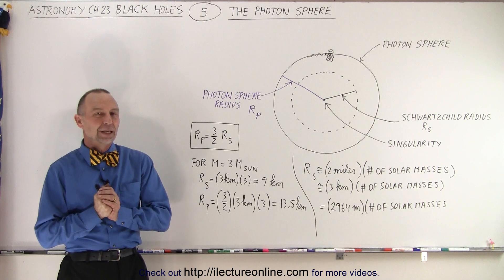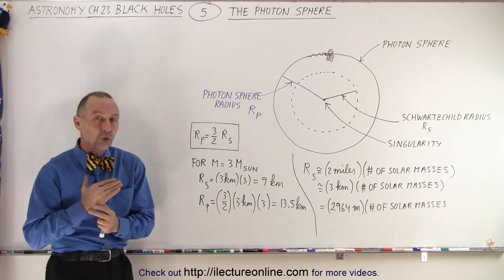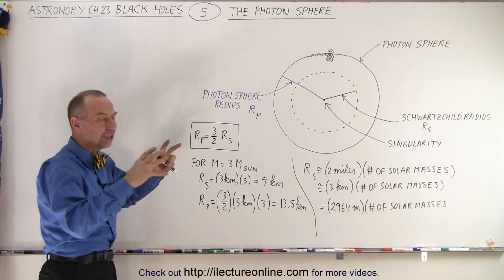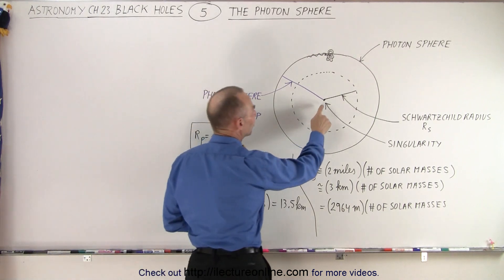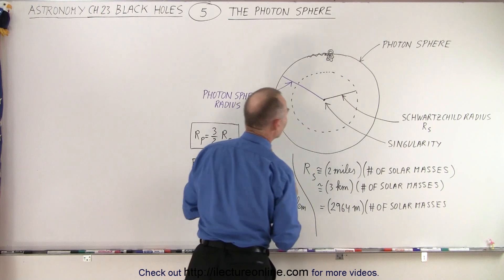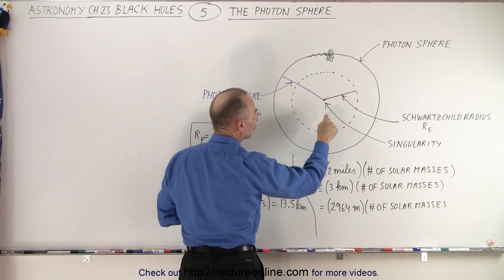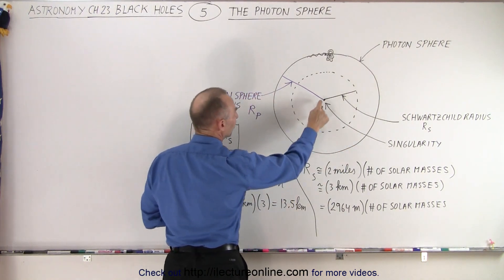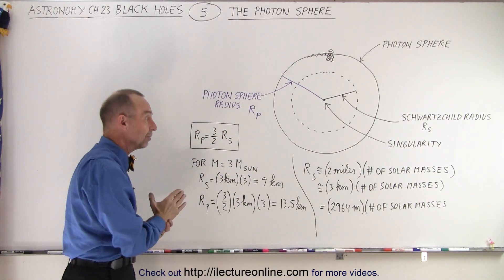Welcome to ElectronLine. Another very interesting aspect of a black hole is what we call the photon sphere. The photon sphere is another sphere around the outside of the black hole that encapsulates the singularity, the Schwarzschild radius, and the event horizon. The distance from the singularity to the event horizon is called the Schwarzschild radius, and the distance from the singularity to the photon sphere is exactly one and a half times the Schwarzschild radius.